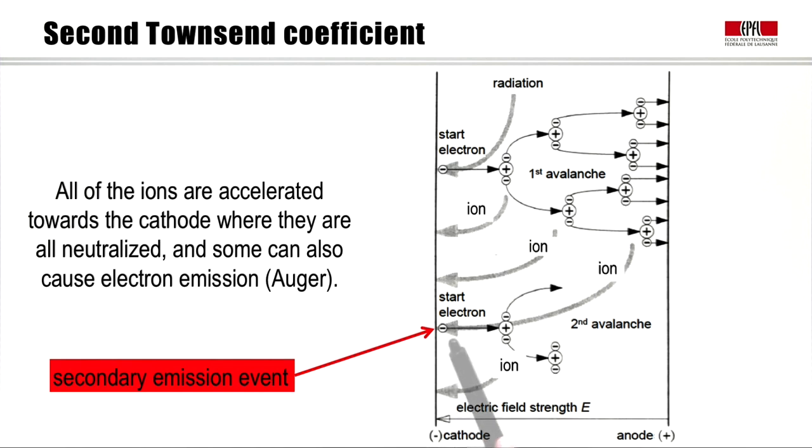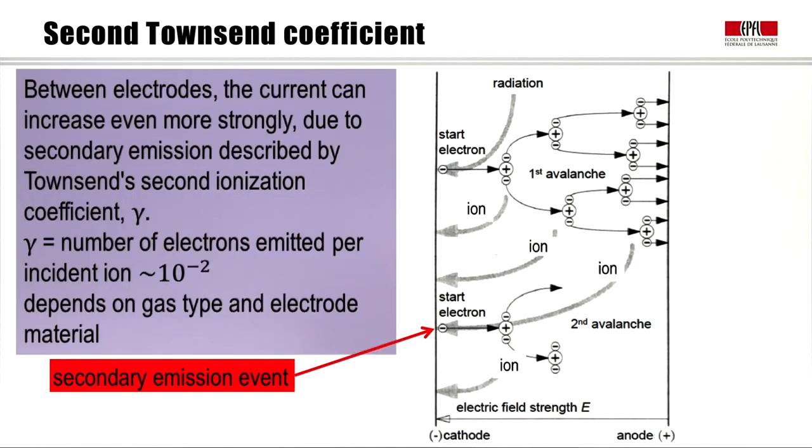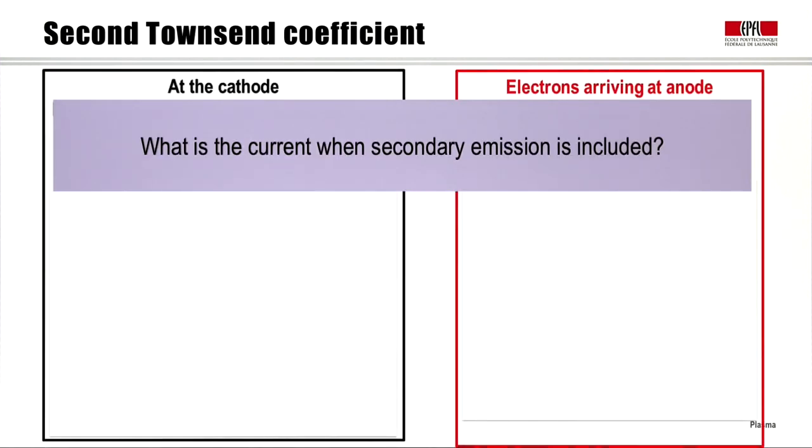The secondary emission events are quite rare, so now we want to consider what the current is in the presence of secondary emission. Between the electrodes, the current can increase even more strongly due to the secondary emission effect. The number of electrons emitted per incident ion is small, of the order of 10 to the minus 2, and the probability, 10 to the minus 2, this probability depends on the type of gas, that is, the type of ion arriving on the cathode, and the type of material that the cathode is made of.